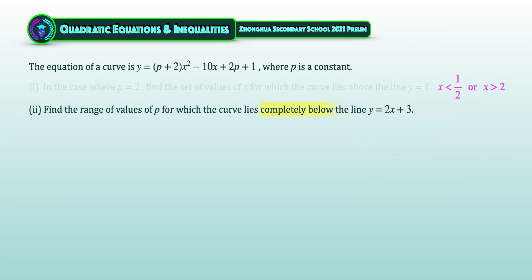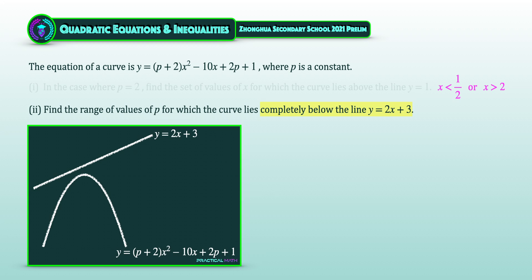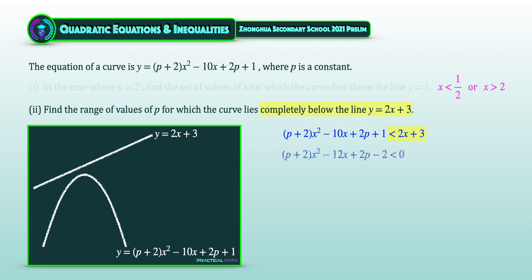For part 2, it was mentioned that the curve is now completely below y = 2x + 3. We'll illustrate this with a sketch. We form an inequality by setting the curve to be less than 2x + 3. Simplifying this inequality gives us (p + 2)x² − 12x + 2p − 2 < 0.